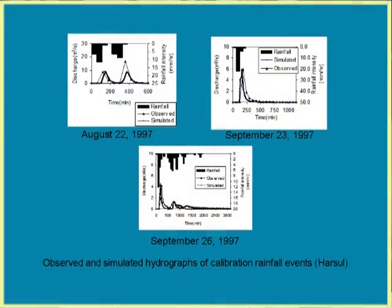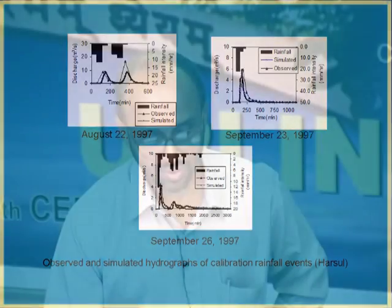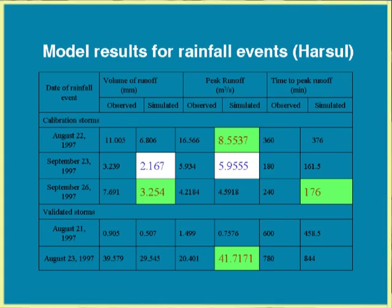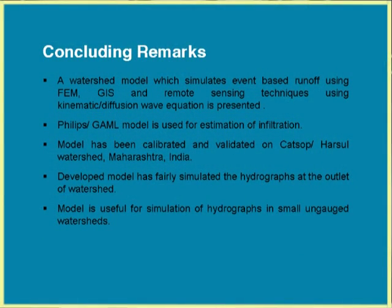This shows the calibration results — rainfall and runoff plotted against time for 3 events — and then validation events. For this watershed, the model is working much better. Results for volume of runoff, peak runoff, and time to peak are compared for calibrated and validated events. The complexity of this kind of model — especially data availability, combined with the framework of a numerical model like finite element method and GIS database development — makes it a very difficult task.